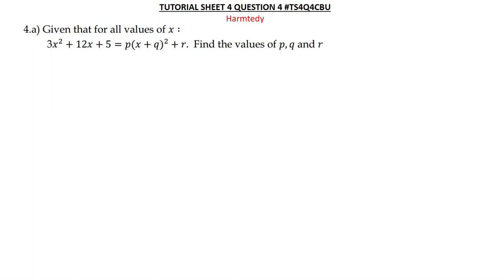3x squared plus 12x plus 5 is equal to p(x + q) squared plus r, find the values of p, q and r. In other words, they are just asking us to use the complete the square method. They want us to complete the square of this quadratic expression we've been given.